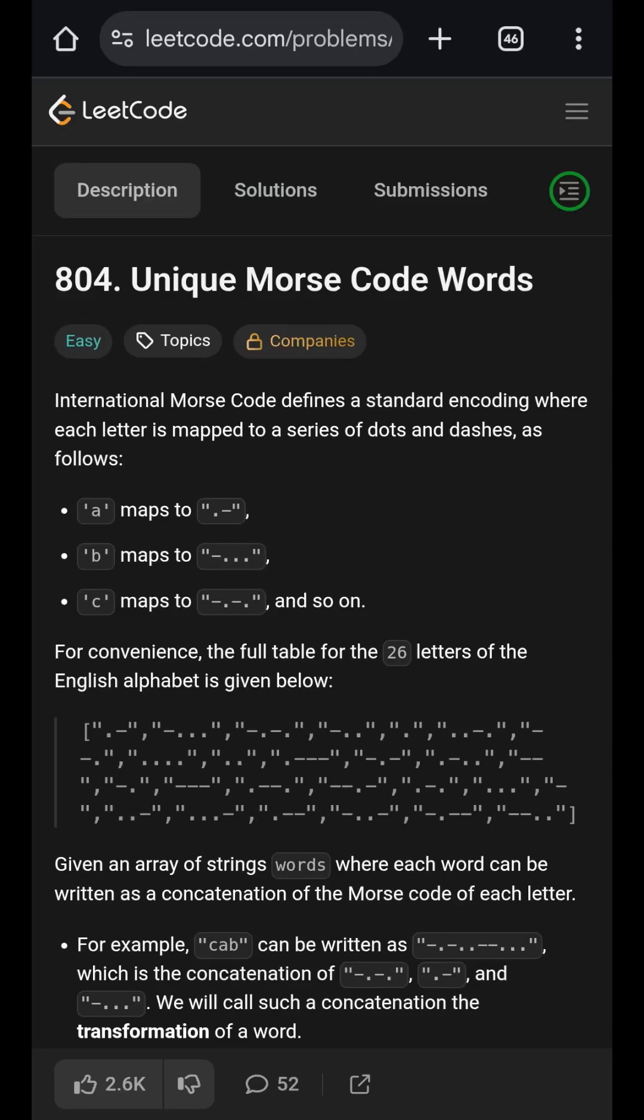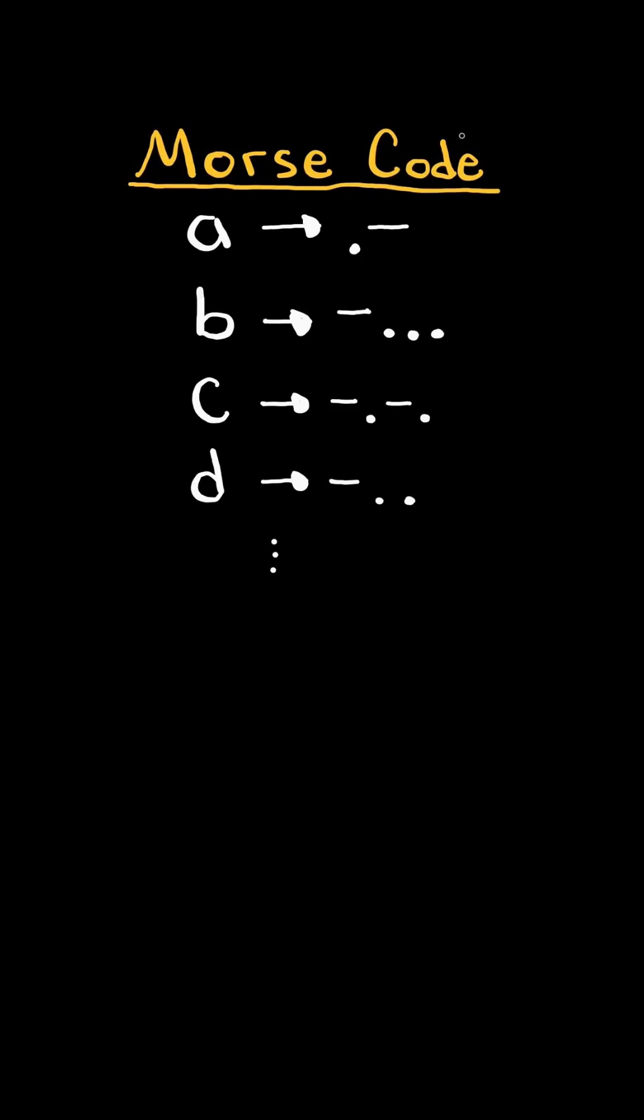Unique Morse code words. Morse code is an encoding where each letter is mapped to a series of dots and dashes. We are given an array of strings and consider the Morse code transformation of each of the words.